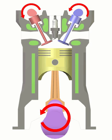A four-stroke engine is an internal combustion engine in which the piston completes four separate strokes while turning the crankshaft. A stroke refers to the full travel of the piston along the cylinder, in either direction.